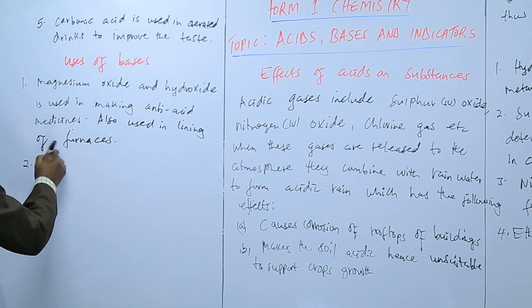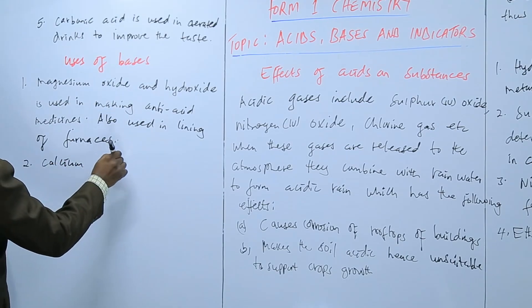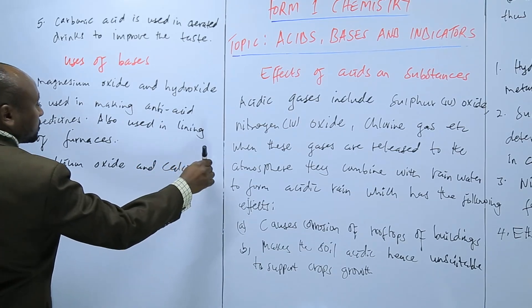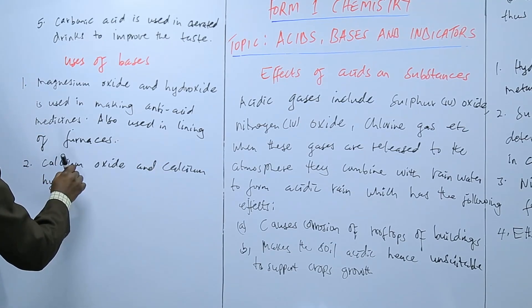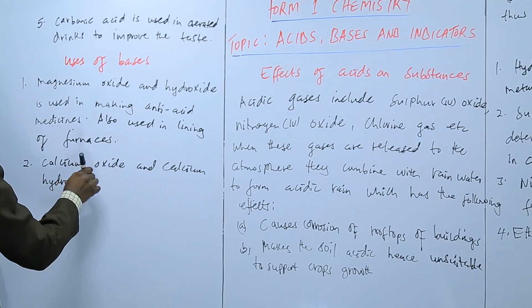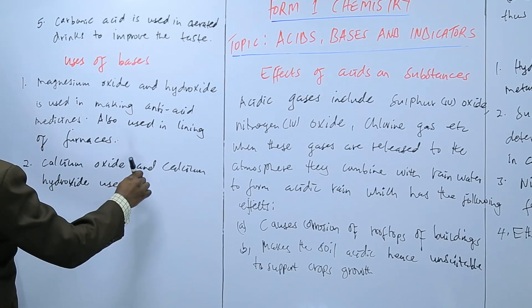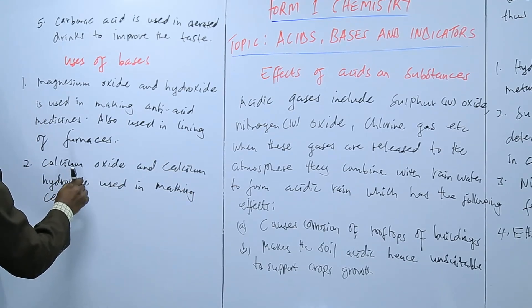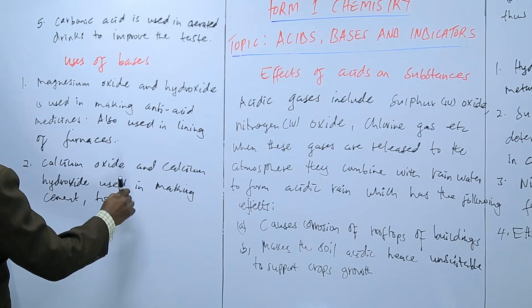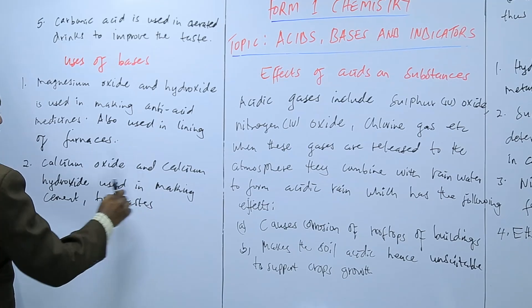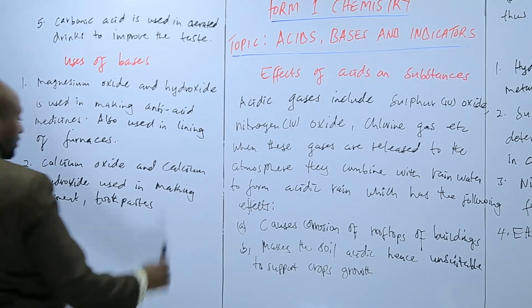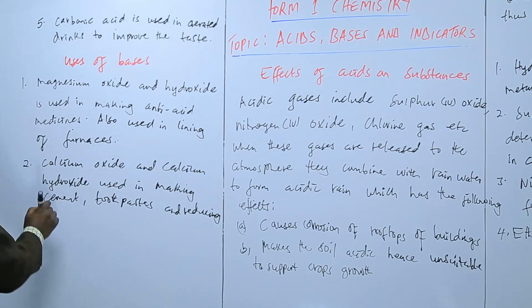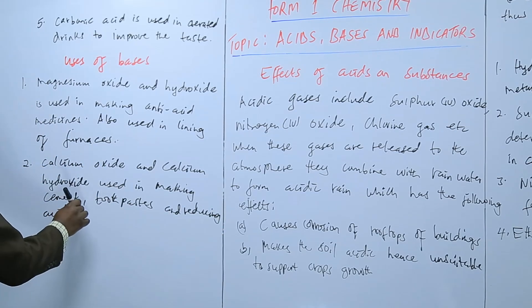Then we have calcium oxides and calcium hydroxide. Used in making cement, toothpastes, because they are rich in calcium.